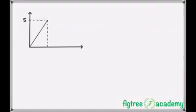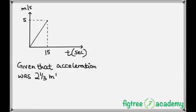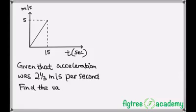Another example, which is my last example. Here I am given my unknown on the speed axis which is S, and my time is 15 seconds. And this was just the line. So here, distance covered, and you can be given acceleration. Given that the acceleration was 2⅓ meters per second per second, find the value of S. I want to find the value of speed here.